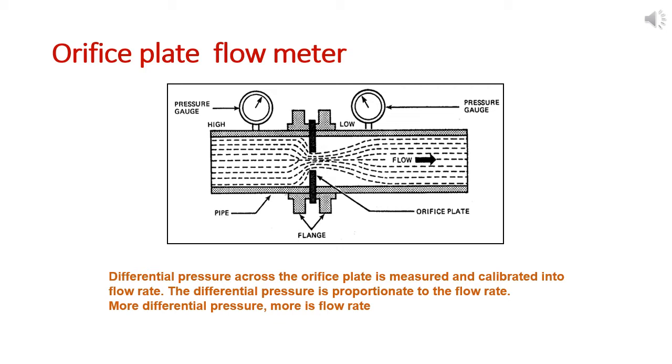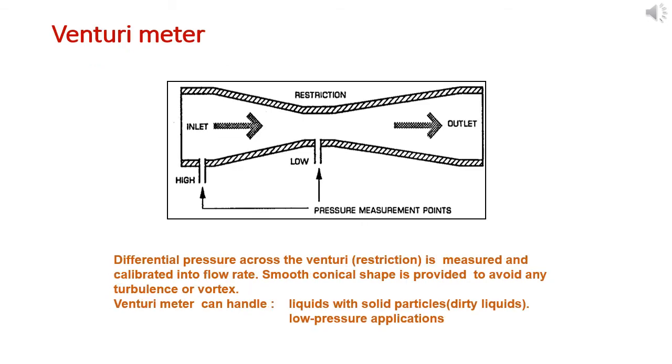Another type is the venturi meter. The working principle is the same as the orifice plate - differential pressure across the venturi is measured and calibrated into flow rate. A smooth conical shape is provided to avoid any turbulence or vortex. Venturi meters can handle liquids with solid particles or low-pressure applications.